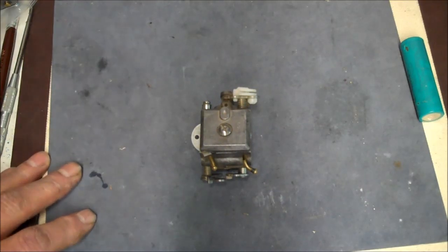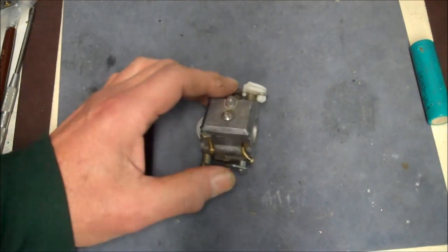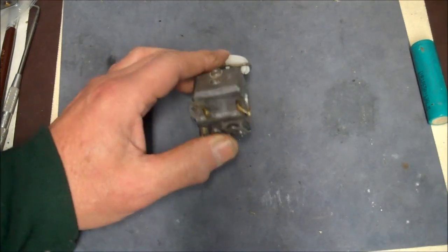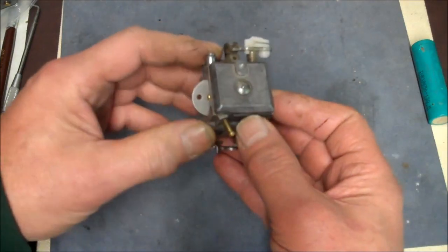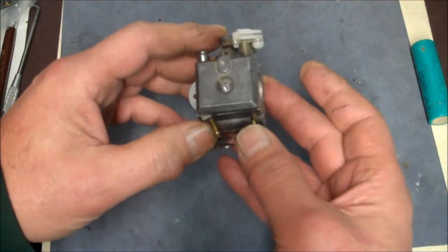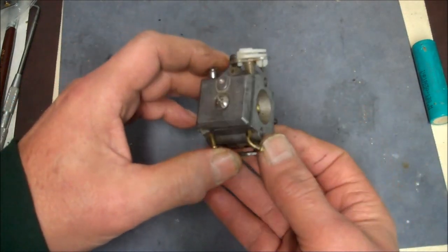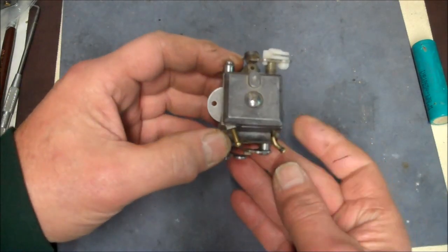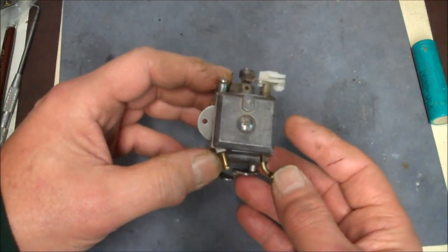Hey y'all. Today we're going to be looking at this carburetor. This is from a Makita chainsaw. Makita, Dolmar, same chainsaw. So what we're going to do here is just going to take it apart, show you all the parts and what to look for. And then you could get a rebuild kit, put it back together. So let's get started.